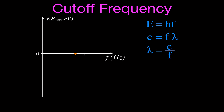We call it the cutoff frequency, though you could also call it the cutoff energy or the cutoff wavelength. At some point, the light we're shining will have a high enough frequency and energy to overcome the work function and release some electrons. Any remaining energy above the work function is given to those electrons as kinetic energy. The greater the frequency, the more energy is left over after overcoming the work function, and the electrons will have more kinetic energy.